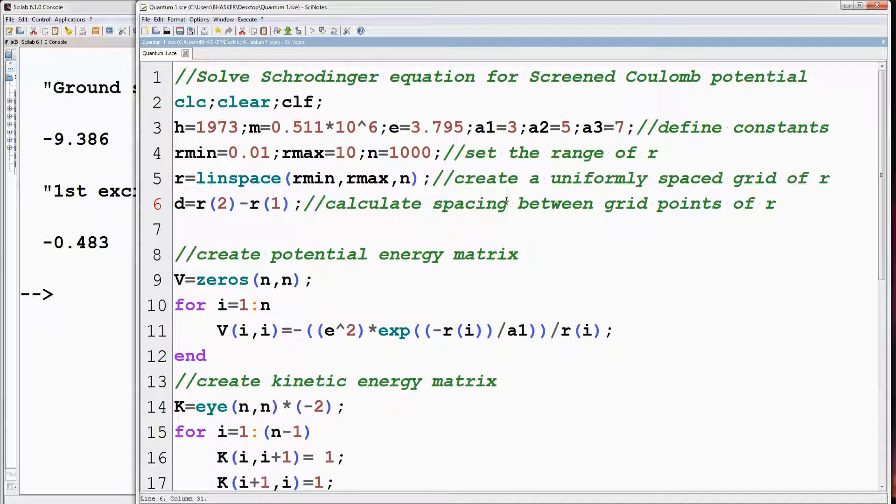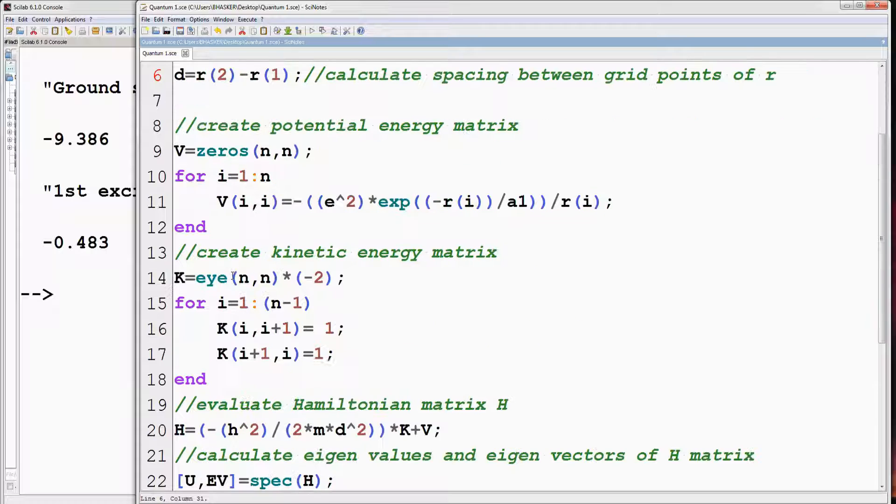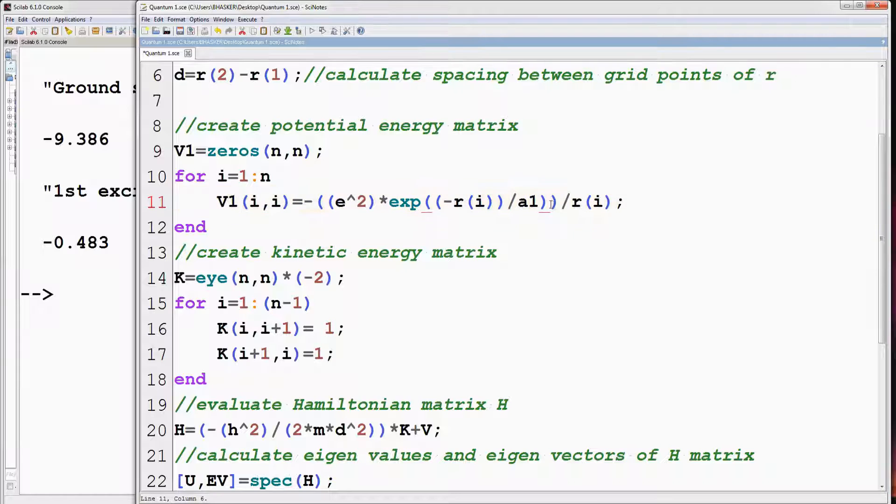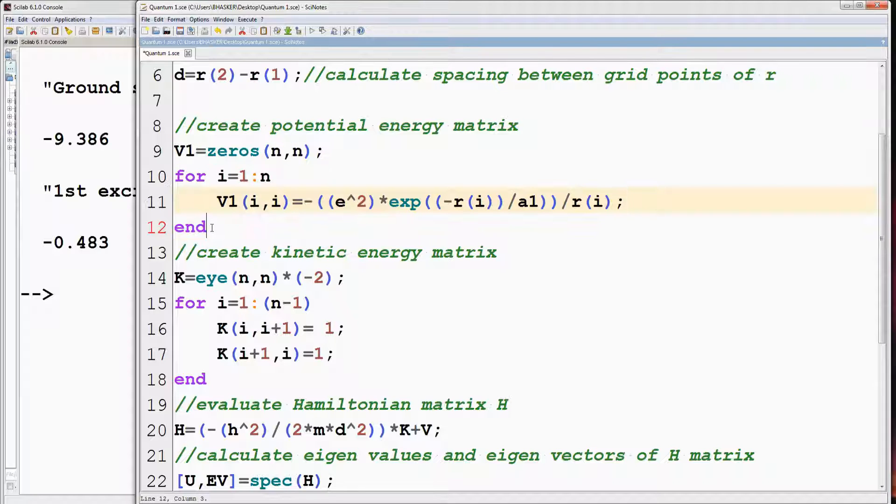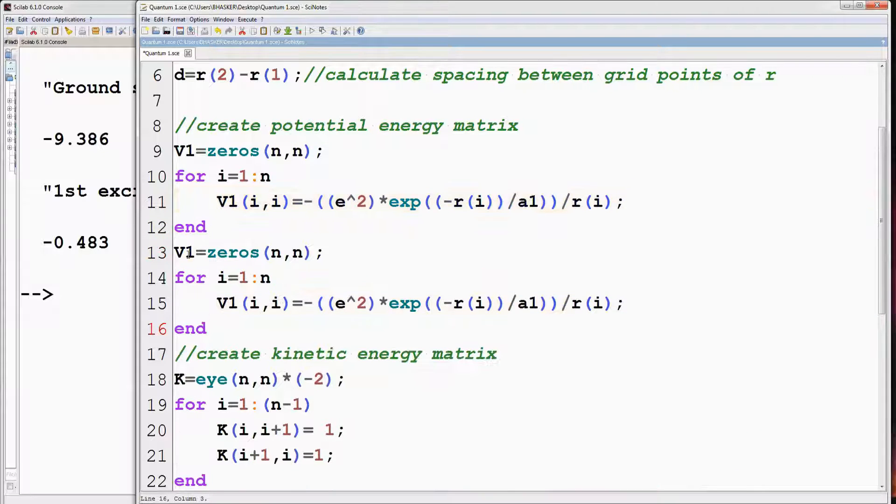We can change a1 to a2 or a3 in the expression for potential and find the corresponding solutions separately. But we can also find the solutions for all three values of screening constants simultaneously. For this, we have to define different expressions of potential for different values of screening constants. Let the first potential energy matrix be v1 for screening constant a1. Similarly, we can have expressions for v2 and v3 for screening constants a2 and a3 respectively.